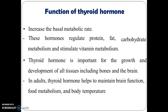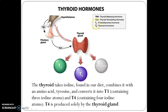The functions of thyroid hormones: they increase the metabolic rate. These hormones regulate protein, fat, and carbohydrate metabolism and stimulate vitamin metabolism. Thyroid hormone is important for the growth and development of all tissues, including bones and the brain. In adults, thyroid hormone helps to maintain brain function, food metabolism, and body temperature.